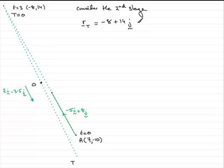And then plus T times this velocity vector, 2i minus 3.5j, T lots of 2i minus 3.5j.